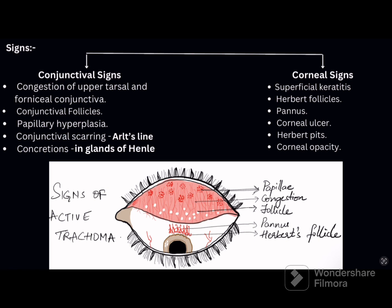The signs of trachoma are divided into conjunctival and corneal signs. Conjunctival signs include: congestion of upper tarsal and fornicial conjunctiva; conjunctival follicles most commonly seen on upper tarsal conjunctiva and fornix, but also in lower fornix, plica semilunaris, and caruncle — sometimes on bulbar conjunctiva as well. Conjunctival follicles are pathognomonic of trachoma.